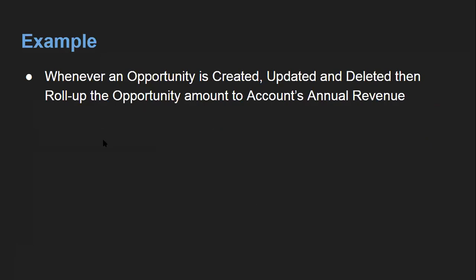This is a real-time scenario that you might need in your projects as well. Whenever an opportunity is created, updated, and deleted, we need to roll up the opportunity amount to the account's annual revenue. Whenever we create any opportunity, we can link that opportunity with an account. If an opportunity is linked to any account, we need to add the amount to the annual revenue field that is available on the account.